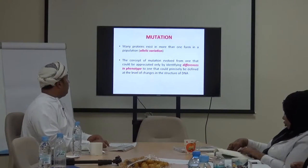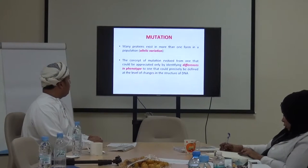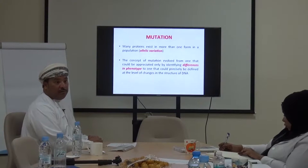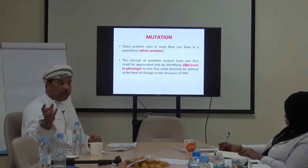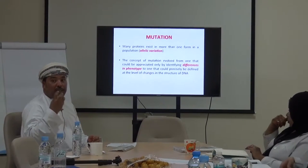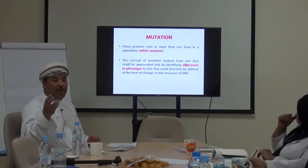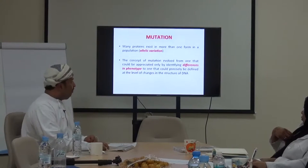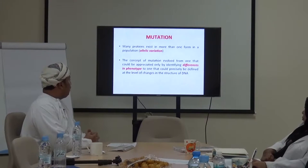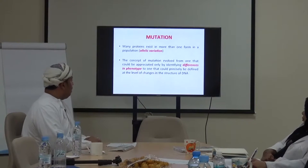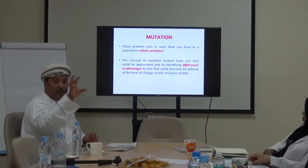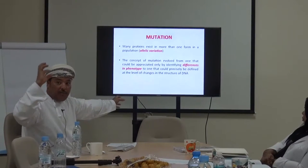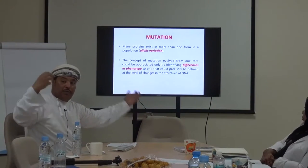Many proteins exist in more than one form and show variation in a population — same protein but different forms. Alleles are different forms of a gene; you have alleles from the father and alleles from the mother of the same gene. The concept of mutation evolved from one appreciated by identifying differences in the phenotype to one precisely defined at the level of DNA structure change — from phenotype to genotype.